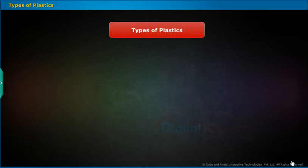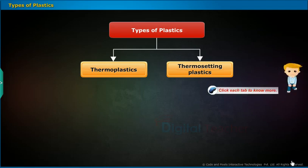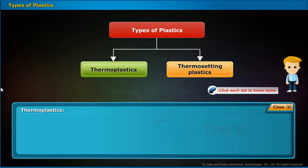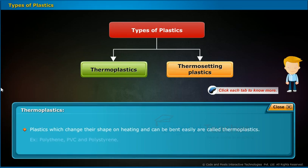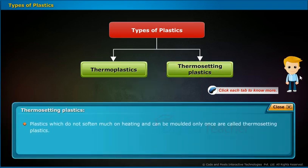Plastics can be classified into two categories based on their thermal properties: thermoplastics and thermosetting plastics. Plastics which change their shape on heating and can be bent easily are called thermoplastics. Polythene, PVC and polystyrene are common examples of thermoplastics. Plastics which do not soften much on heating and can be moulded only once are called thermosetting plastics. Bakelite and melamine are common examples of thermosetting plastics.